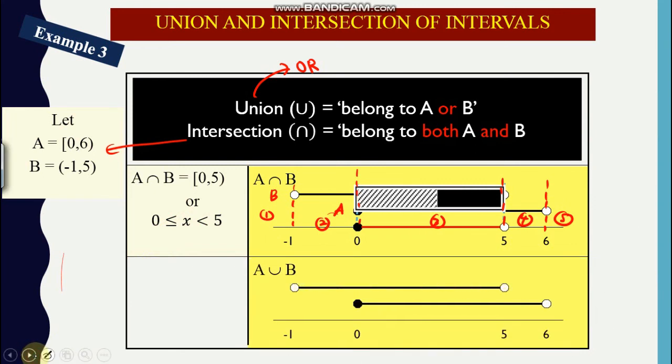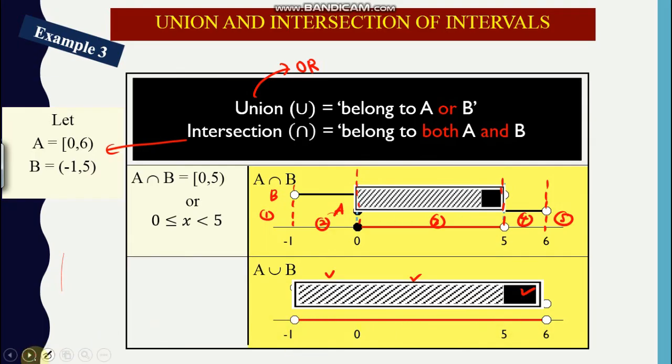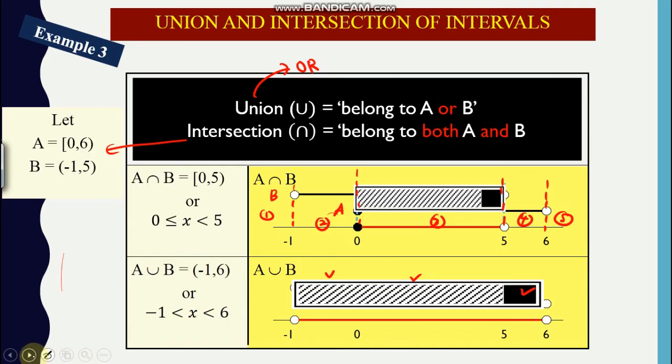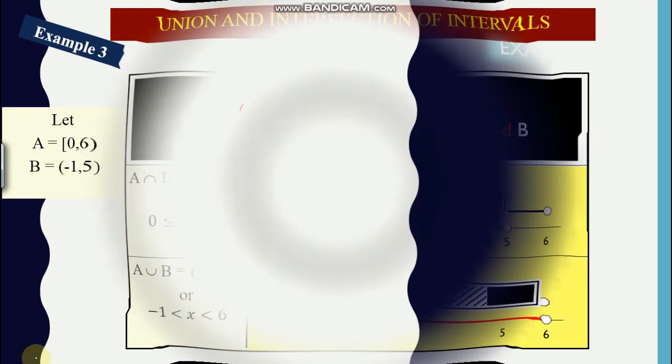Okay, so now what happens if you want to find a union region? So union region again, have to list down all the lines and then it's actually all the region with line. Okay, so from negative one up until six.